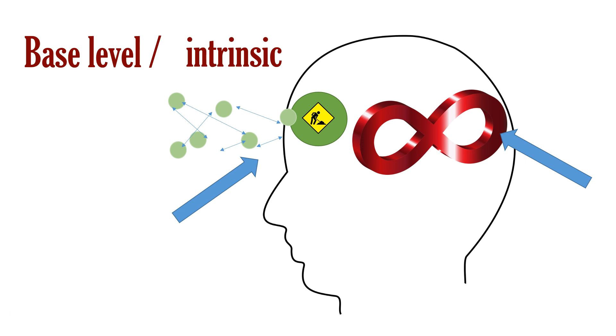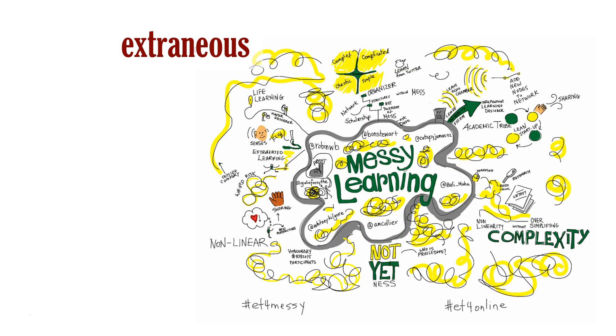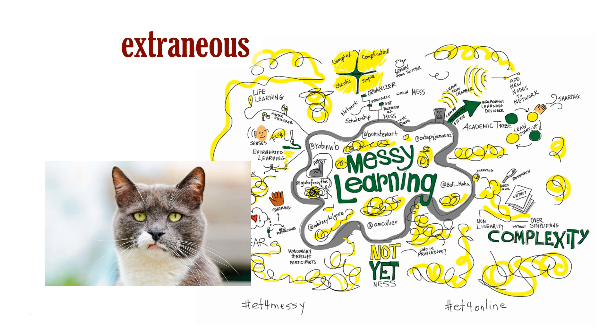The second type is extraneous load. This is the additional load imposed by poorly designed instructional materials. Any unnecessary details included in instructional material, like funny cat memes or background music or unnecessary anecdotes or flashy but useless animations, causes some of the student's cognitive capacity to be spent dealing with that.